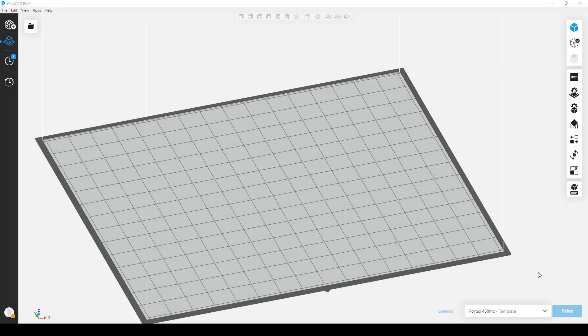Taking a look at GrabCAD Print. Down in the bottom right corner, I have selected a Stratasys Fortis 450MC as my template. Using that and then coming up to the upper right hand set of icons and selecting the tray settings. When I click on this, it brings up a menu that allows me to see all the materials that are available on that given system.